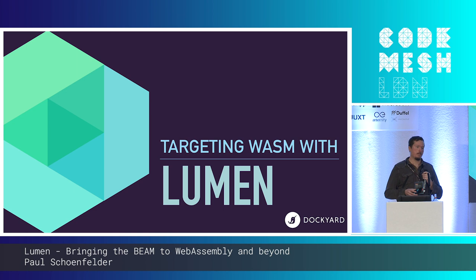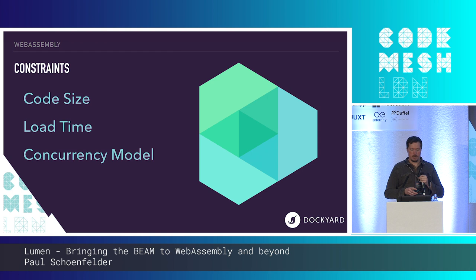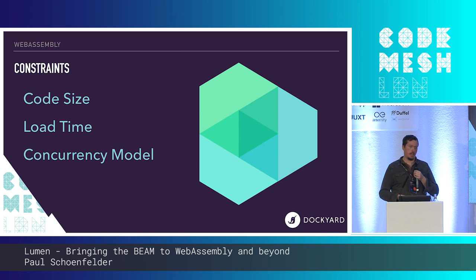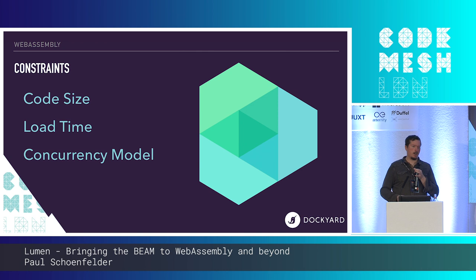Specifically targeting WebAssembly with Lumen — how do we compile Erlang and Elixir to this environment? There are three major constraints: code size, load time, and the concurrency model that WebAssembly engines in the browser use. Code size is an obvious constraint because the more code you have to download onto the client, the longer it takes to load and compile. That directly affects load time — the longer it takes to load your application, the slower it appears to users, the more annoyed they get, the more likely they are to go somewhere else. The concurrency model is very unique in WebAssembly versus a traditional server environment — there are no threads in the familiar sense; it's more like you're given processes.